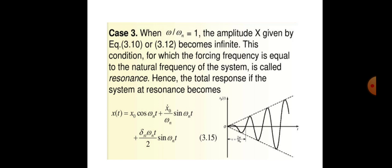Now, considering the case where the amplitude of x is given as one when omega upon omega-n equals one. Here, omega is the excitation frequency or angular velocity, and omega-n is the natural frequency. This condition — where the forcing frequency equals the natural frequency of the system — is called resonance.